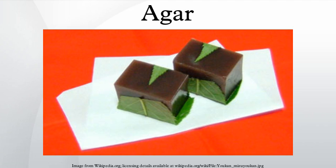Agar consists of a mixture of agarose and agaropectin. Agarose, the predominant component of agar, is a linear polymer made up of the repeating monomeric unit of agarobios. Agarobios is a disaccharide made up of D-galactose and 3,6-anhydro-L-galactopyranose. Agaropectin is a heterogeneous mixture of smaller molecules that occur in lesser amounts, and is made up of alternating units of D-galactose and L-galactose, heavily modified with acidic side groups such as sulfate and pyruvate.